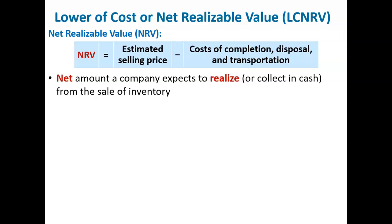To do this, a company compares the inventory's cost to the inventory's net realizable value. Net realizable value is the estimated selling price of the inventory in the ordinary course of business reduced by reasonably predictable costs of completion, disposal, and transportation, such as sales commissions and shipping costs. Another way to think about net realizable value is that it's the net amount the company expects to realize or collect in cash from the sale of inventory.